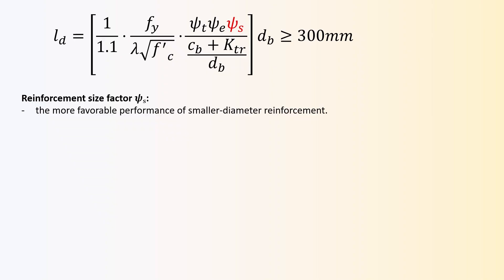The reinforcement size factor, ψs, reflects the more favorable performance of smaller diameter reinforcement. For 20 mm diameter and smaller deformed bars and wires, the factor is 0.8, whereas for larger bars, the factor is 1.